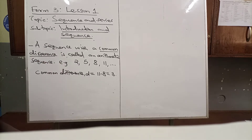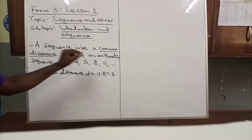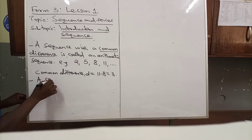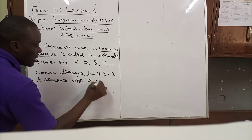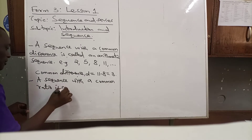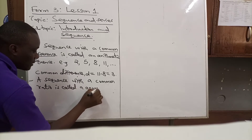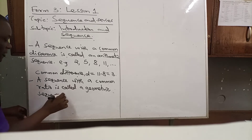That's what we call an arithmetic sequence. On the other hand, I want us to define what a geometric sequence is. A sequence with a common ratio is called a geometric sequence. I will give you an example so that you can see the difference between an arithmetic sequence and a geometric sequence.